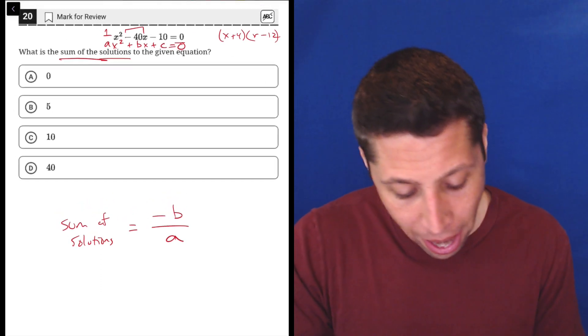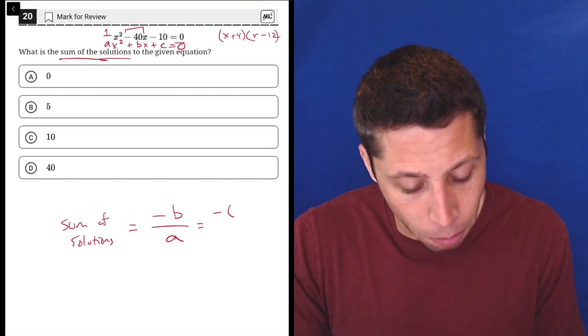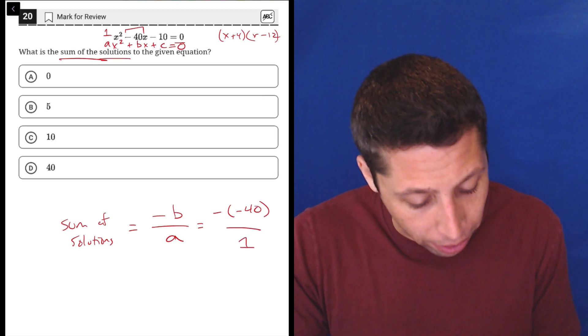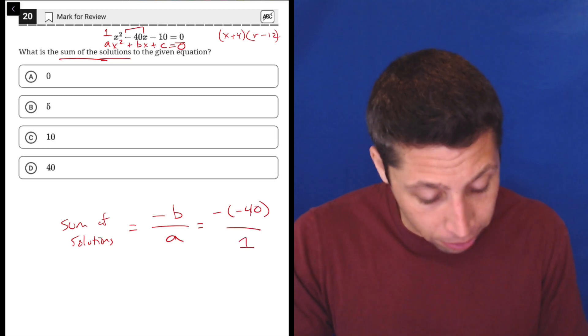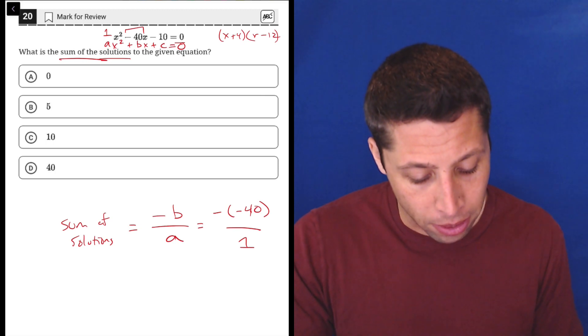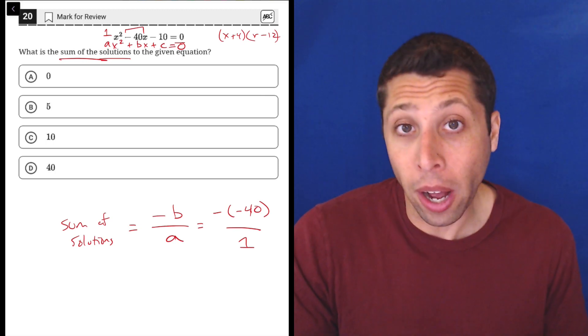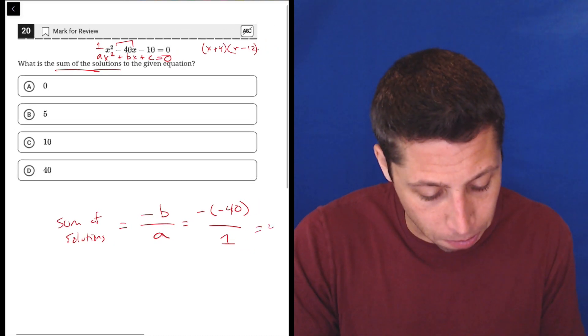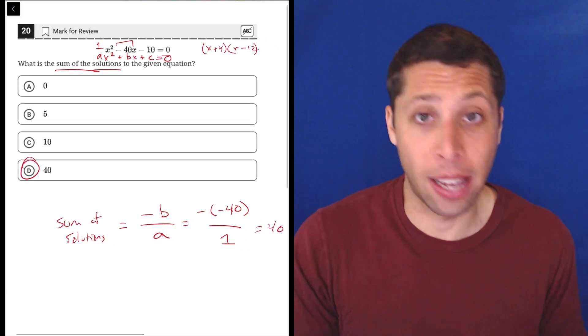So, the reason this all matters here is then we can just plug in. Our b, like I said, was negative 40. And our a was one. So, all the math that really is required here is recognizing that two negatives make a positive, because negative times negative one times negative 40 is just positive 40. So, this whole thing is really just positive 40. And that's choice D, and that's the answer.